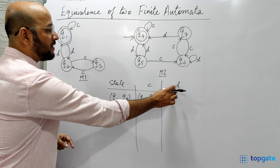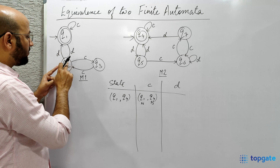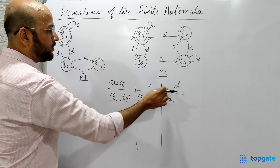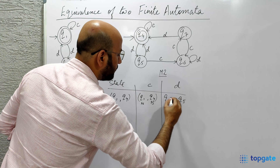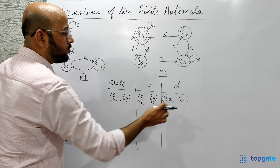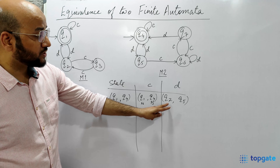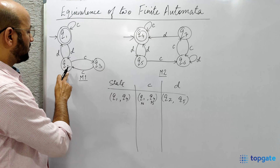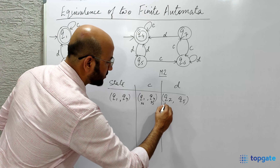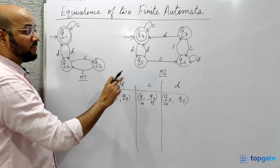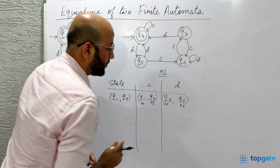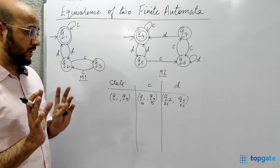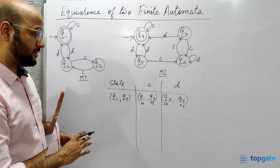From Q1 with input alphabet D we reach state Q2, and from Q4 with input D we reach state Q5. So we get the pair Q2 and Q5. Q2 is a non-final intermediate state, and Q5 is also a non-final intermediate state, so I write IS for both. We continue this process unless we find a pair where one element is final and one is non-final — only then can we conclude the machines are not equivalent.